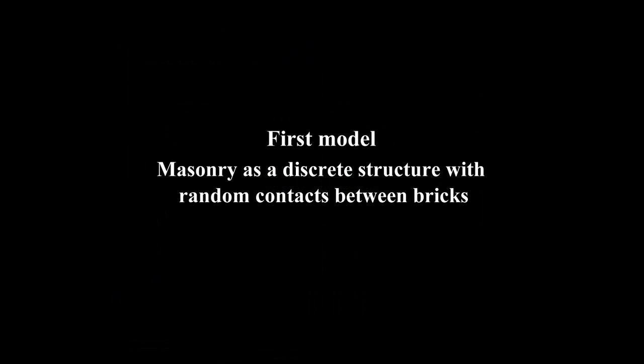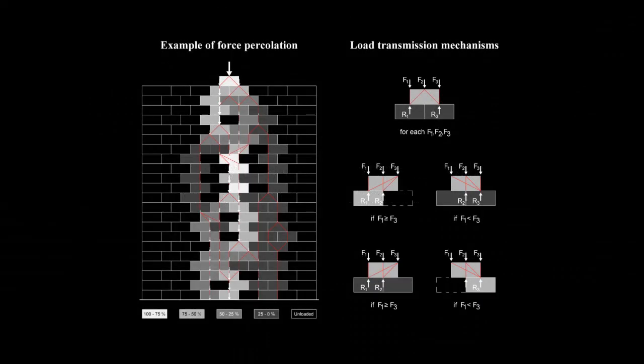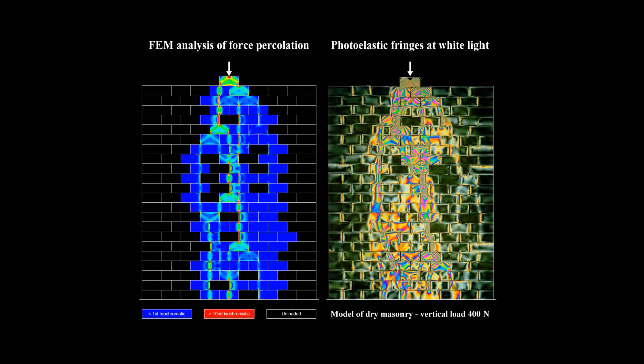We have introduced two models to describe our experiments. The first is a micro-mechanical model in which the masonry is a discrete structure with random contact between bricks. This is an example of force percolation calculated through the micro-mechanical model. We see on the right the rules for the random force transmission through the masonry. From the previous determination of stress diffusion using a finite element code, we can obtain the principal in-plane stress difference, reported on the left to be compared with the experiment on the right.